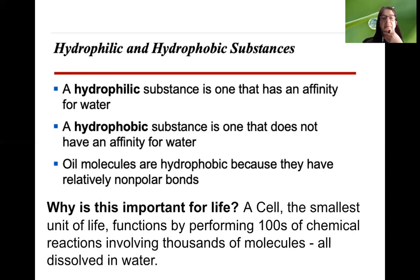Why is water's nearly universal solvent property important for life? Because a cell, the smallest unit of life, is really a miniature chemical factory. Hundreds of chemical reactions involving thousands of molecules occur inside every cell, and these reactions are what sustains life. If water can dissolve thousands of different molecules, chemical reactions can occur — because chemical reactions occur in solution. Water being able to dissolve all of these molecules enables the chemical reactions that sustain life.